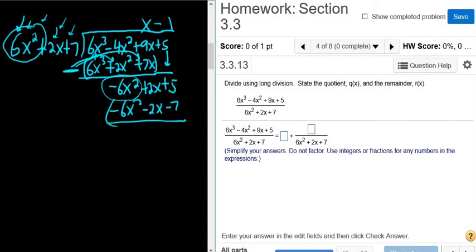Put a parenthesis and minus sign, then add. These cancel. Here you get 2x + 2x, which is 4x. Then 5 + 7 (negative and negative is positive), so that's 12.